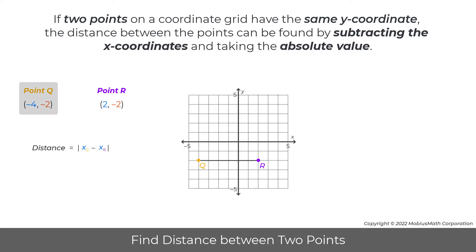For example, points Q and R both have the same y-coordinate of -2. So, -4 minus 2 equals -6. Then, taking the absolute value results in a distance of 6 units between the two points.